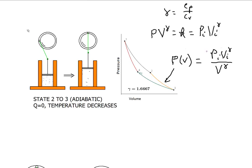In the second process, state two to state three, because of the ideal gas, work is even easier to calculate. Q is zero.